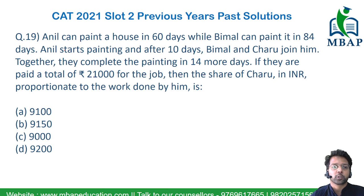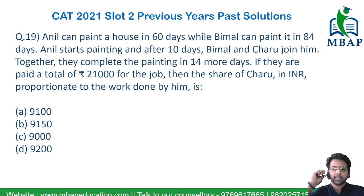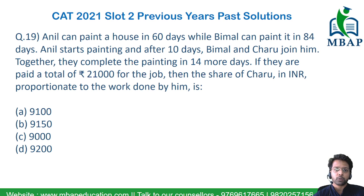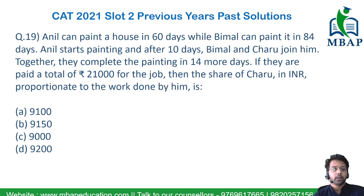Let's see the next question on the topic of time and work. The question says: Anil can paint a house in 60 days while Bimal can paint a house in 84 days. Anil starts painting, and after 10 days, Bimal and Chadhu also join him. So 10 days of work has already been done by Anil alone. Together they complete the entire house in 14 more days. If they are paid a total of 21,000 for the job, then what is the share of Chadhu in proportion to the work done by C?